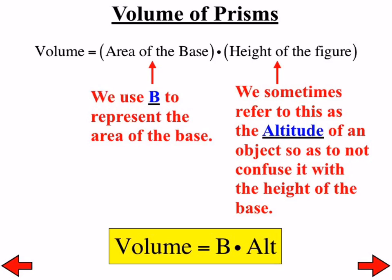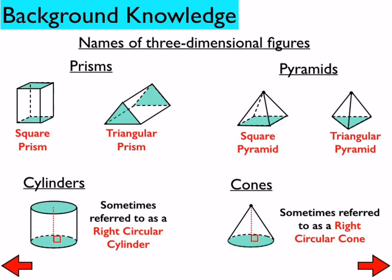That's how I will refer to the volume of any shape with parallel bases: Volume equals capital B, which represents the area of the base, times the altitude. Altitude refers to how tall a figure is. We also have to remember how we name three-dimensional figures, because the name tells us exactly how we're going to find the volume. For example, a triangular prism tells us we need to find the area of the triangle as the base and multiply it by the altitude.